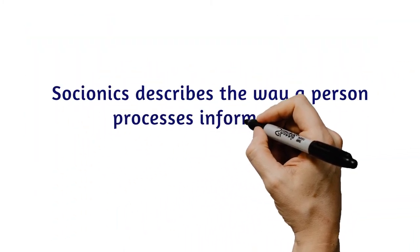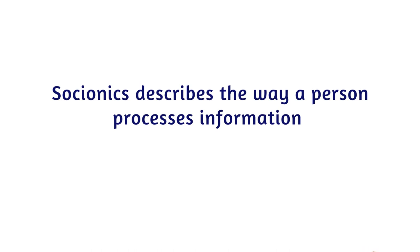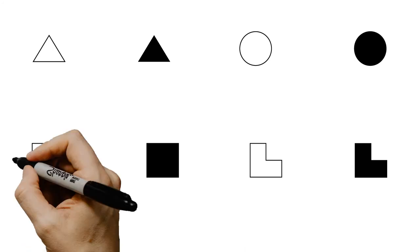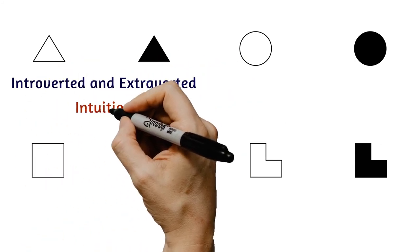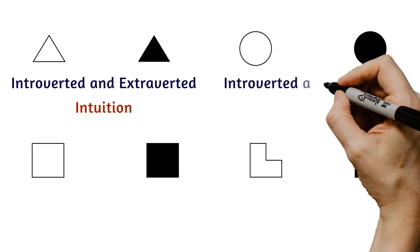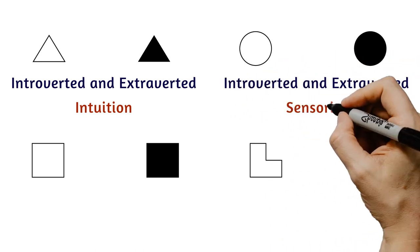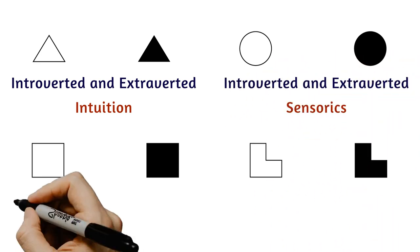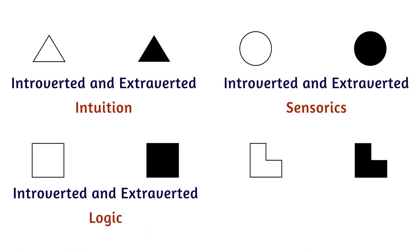Socionics describes the way a person processes information. There are eight kinds of information. Introverted and Extraverted Intuition, represented by a triangle symbol. Introverted and Extraverted Sensorics, represented by a circle. Introverted and Extraverted Logic, represented by a square.